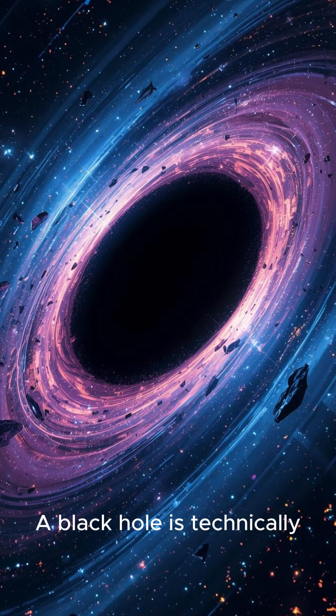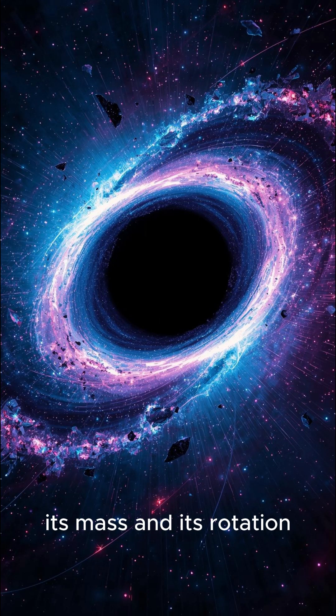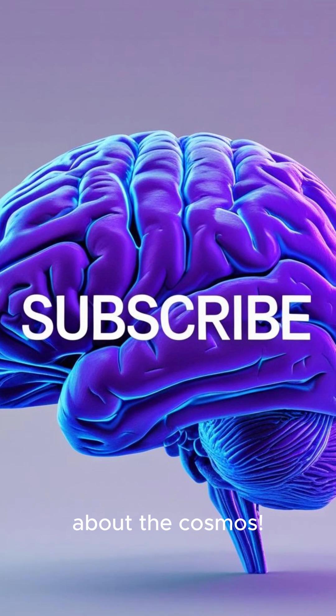Last, once a star collapses, all information about its composition is lost. A black hole is technically defined by only two things: its mass and its rotation, a concept called the no hair theorem. Hit subscribe for more truths about the cosmos.